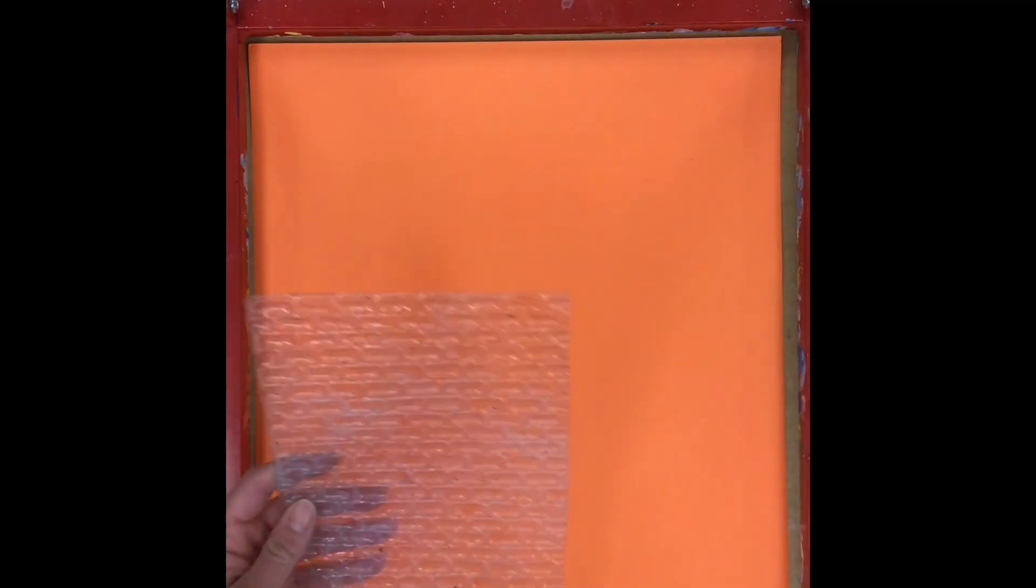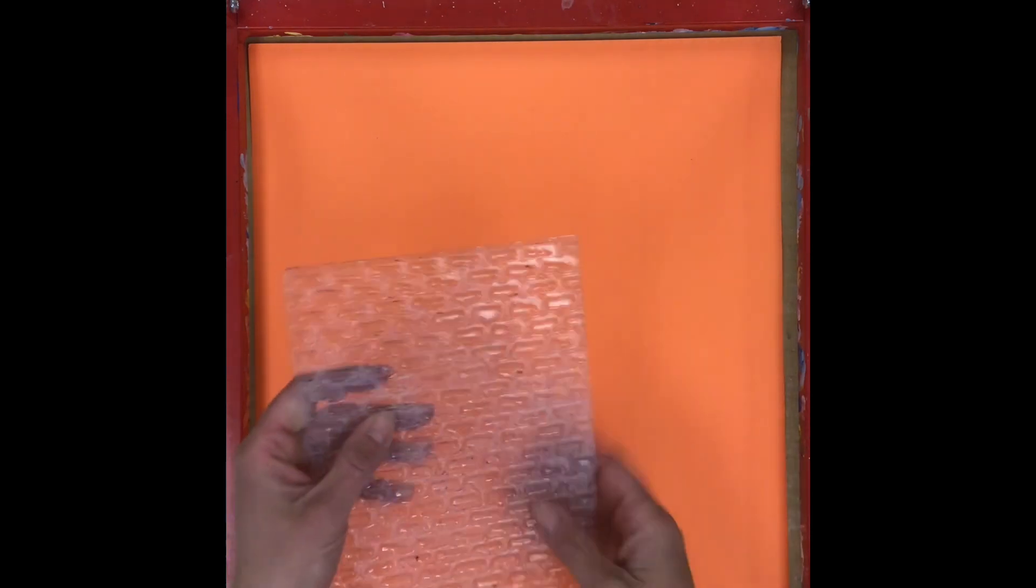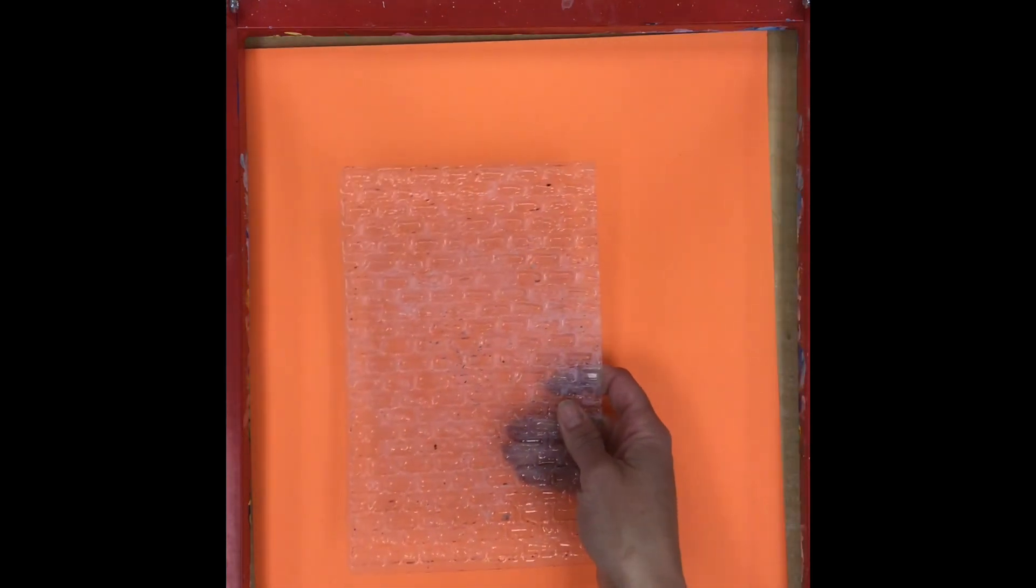I'm going to start by choosing this pattern that looks a little bit like a brick wall, and I'm going to put the plastic texture plate underneath my paper like so.